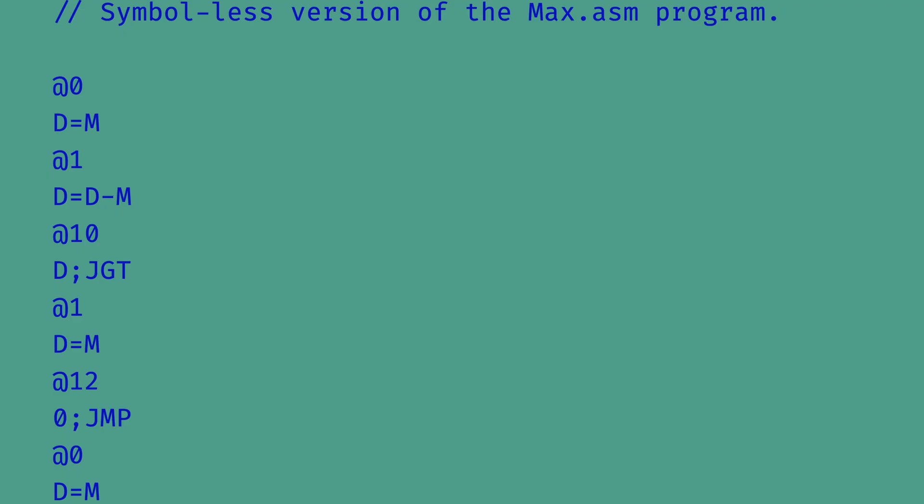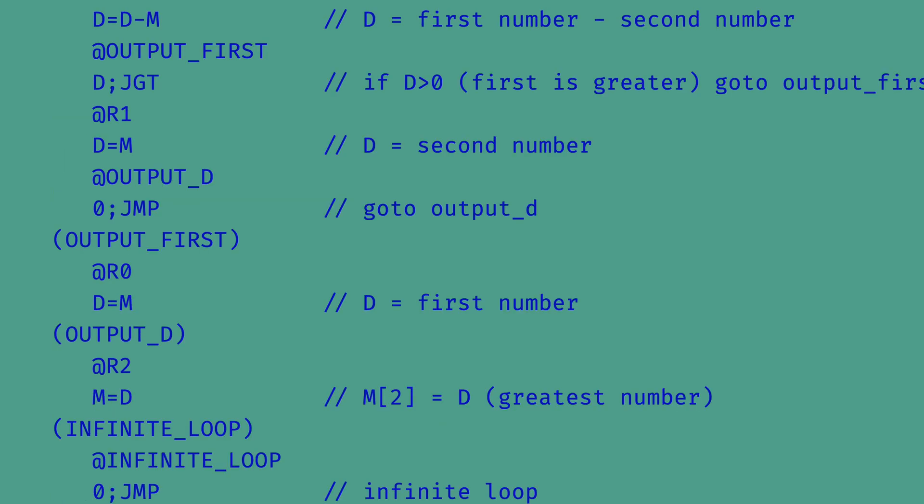When working on your assembler, divide your approach into two phases: direct and symbolic. By direct, I mean write a very bare-bones assembler where we assume there are no labels in our code. Inside the Projects06 directory you'll find a number of assembly language programs — files ending in the extension .asm. Look for the program called maxl.asm, which is written in this symbol-less style. Once your assembler can assemble maxl.asm, move on to the next phase.